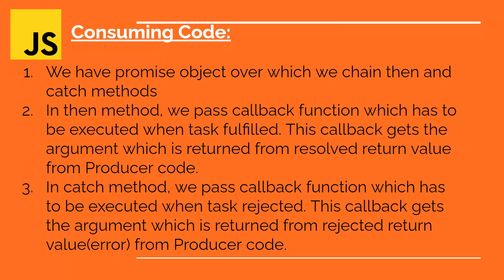In the then method, you pass a callback function which will be executed in case the time-consuming task has been completed or fulfilled successfully. In the catch method, you link another callback function which will be executed in case the time-consuming task ends in error. So in simple terms: you have the promise object, you chain the then method passing the success callback, and you chain the catch method passing the error callback.